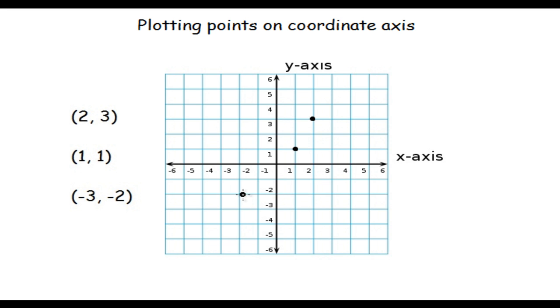So the point (-3, -2) would lie somewhere here. So this is the plot of the 3 points that were given to us. Thank you guys.